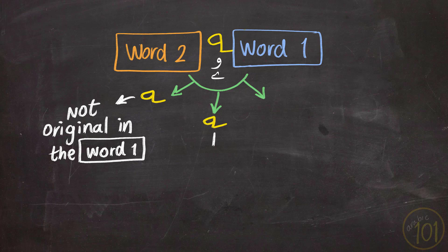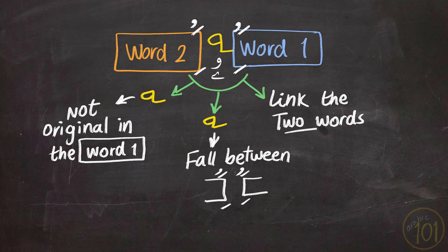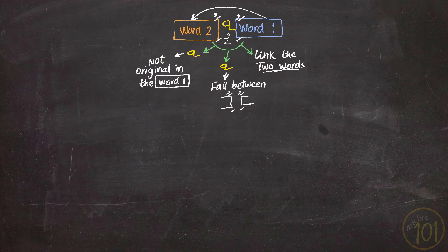Second, the ها has to come between two letters that have فتحة, ضمّة, or كسرة — so there shouldn't be سكون before it or after it. And last, you have to keep on reading. If you stop at the word, then there is no extension required.